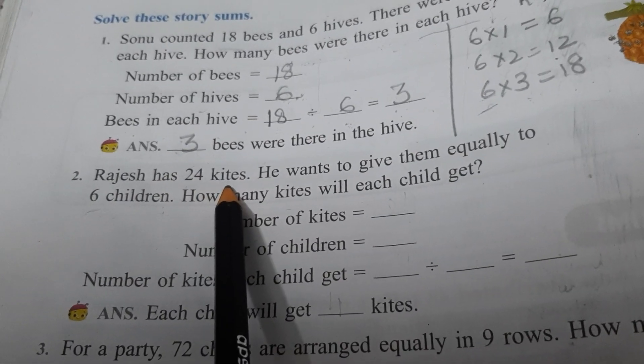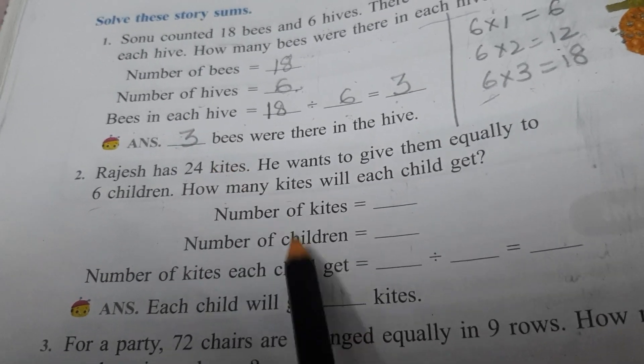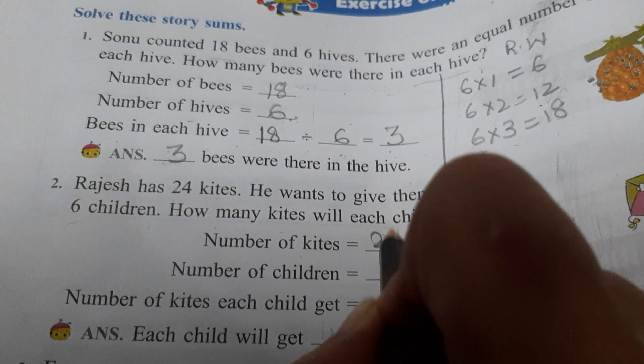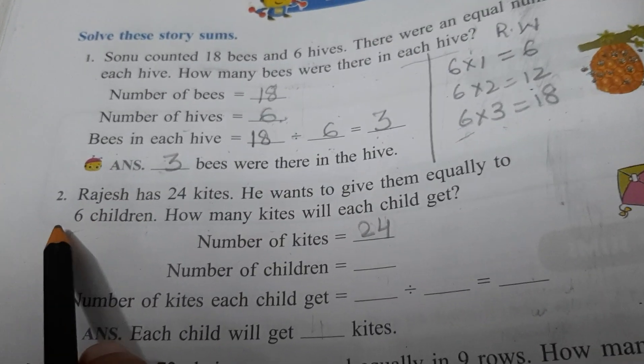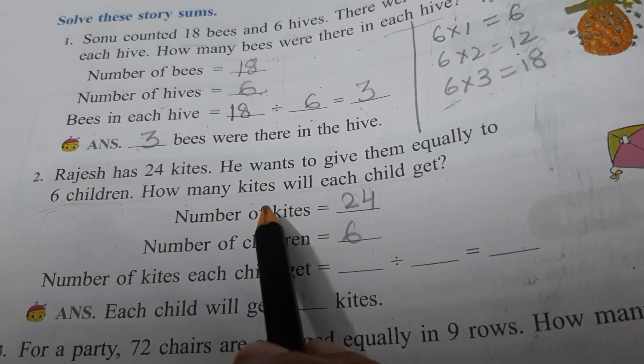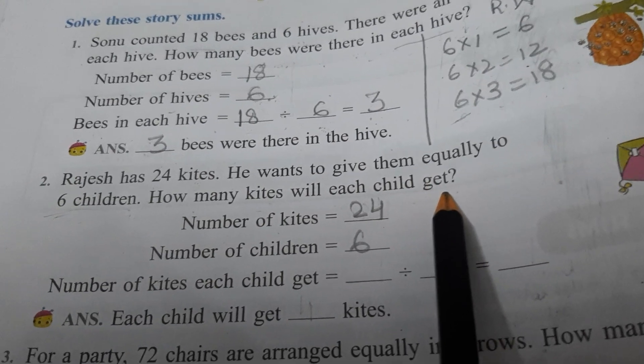Total number of kites 24. So what is given? Kites are given. Number of kites, 24. Then children are given. Number of children, 6.